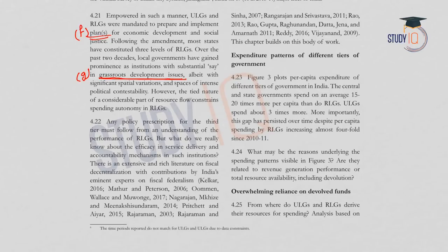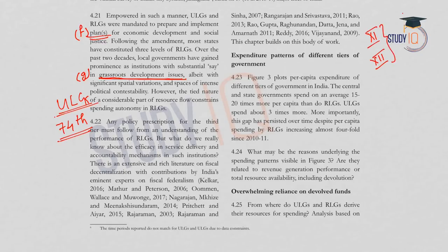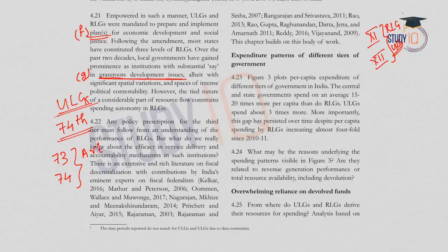Urban local governments were recognized as institutions of self-government by the 74th Amendment Act, and two more schedules were added to the constitution — the 11th Schedule for rural local governments (Panchayats) and the 12th Schedule for urban local governments (municipalities). Both the 73rd and 74th Amendment Acts gain significance from Article 40 of the constitution, which is under the Directive Principles of State Policy.